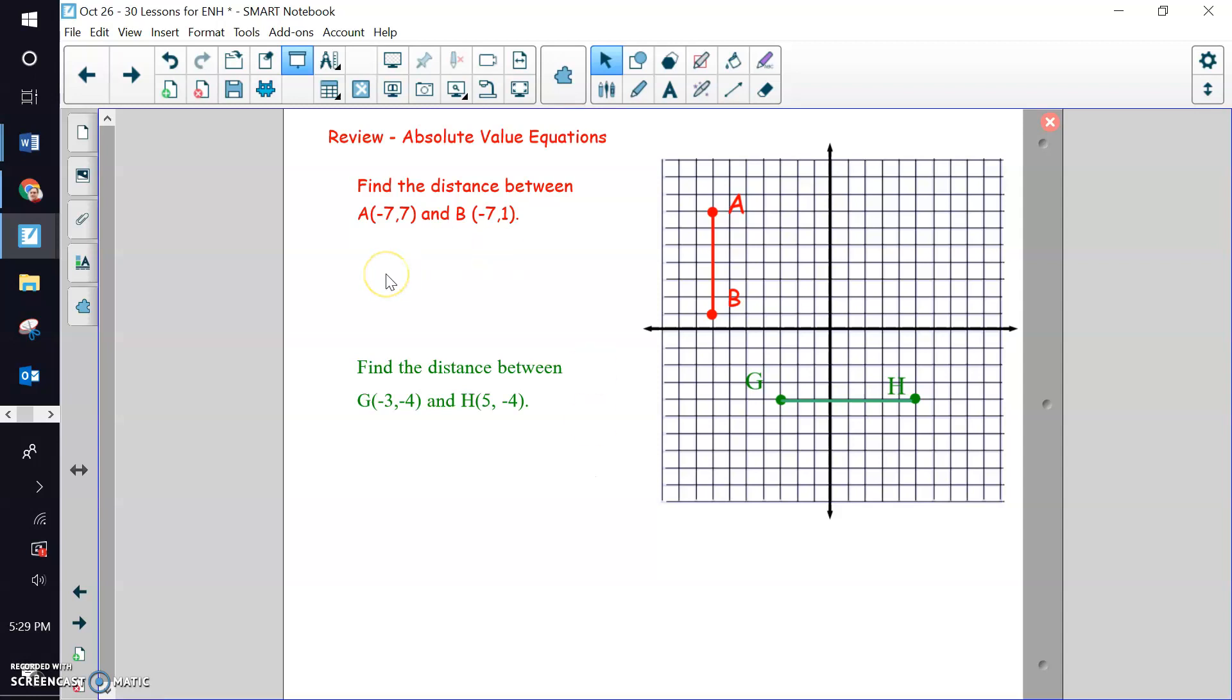So we can tell pretty easily the distance between A and B. We could count these spaces right here. So there's one, two, three, four, five, six. So I know there's six between A and B, but the question is, how do you write the equation and do the math to figure that out? And that's what we want to look at right now.